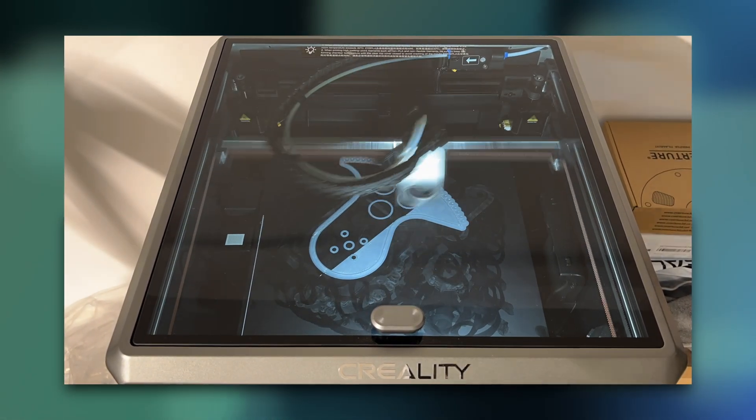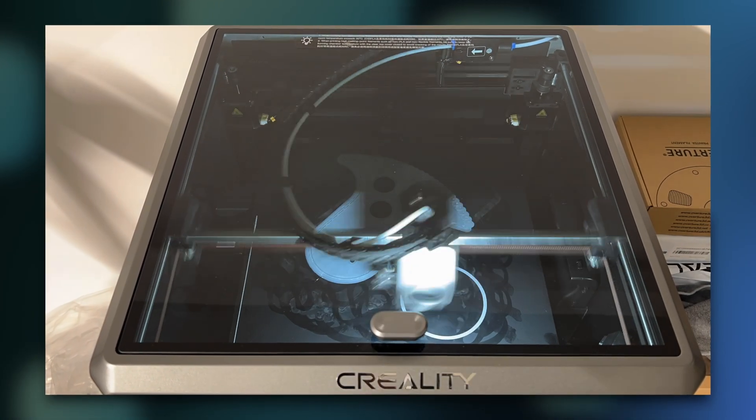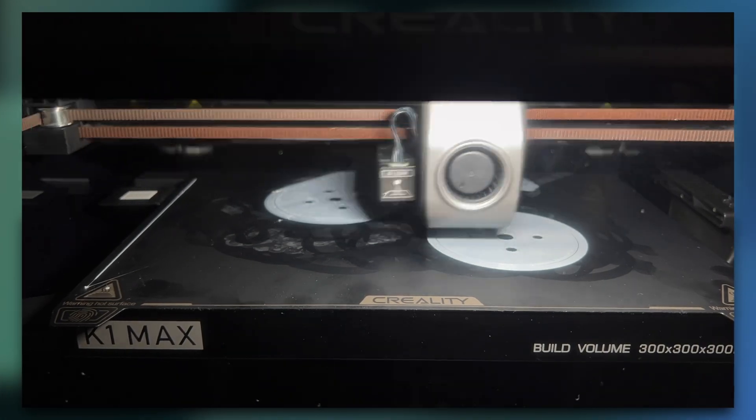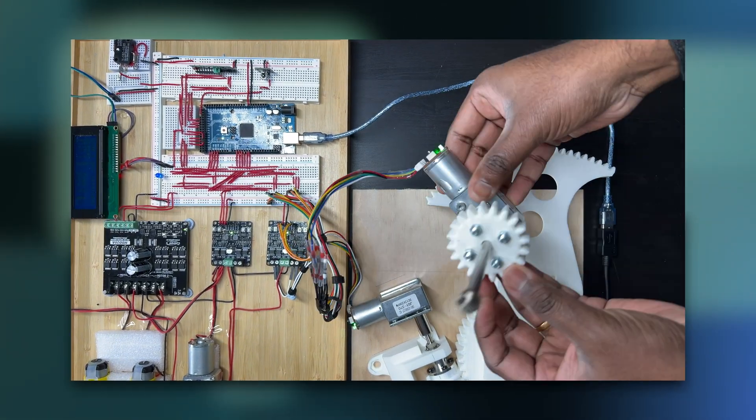Moving on to the vertical movement, I 3D printed the gears but I'm yet to print the vertical arm because that part needs to be made of ABS material. I'm still calibrating my 3D printer for that. To test the logic, I improvised. You can see how I did it.